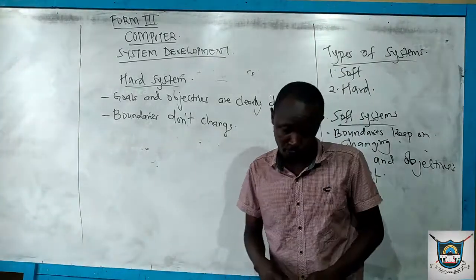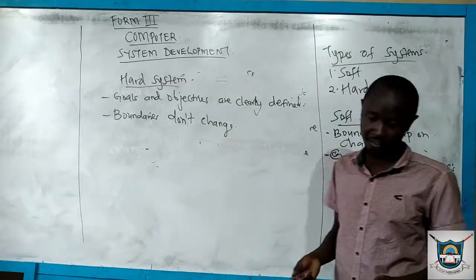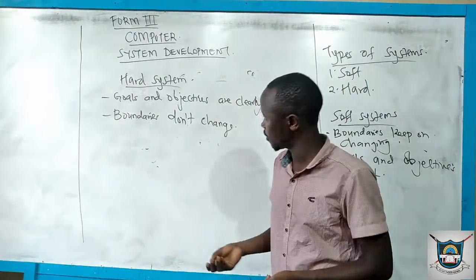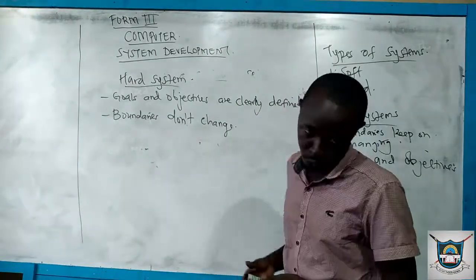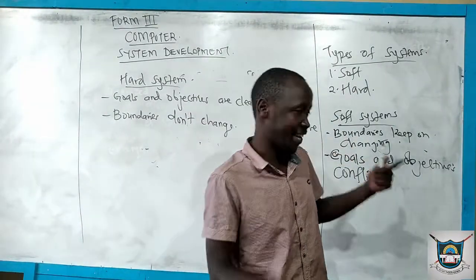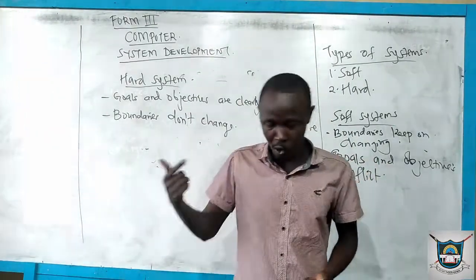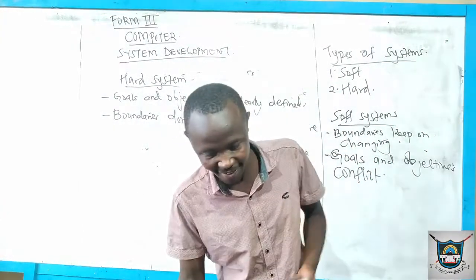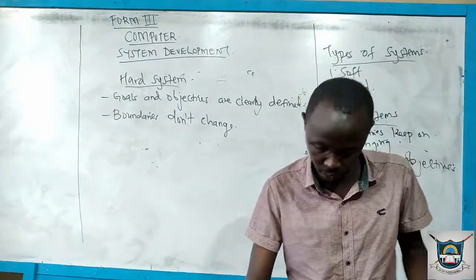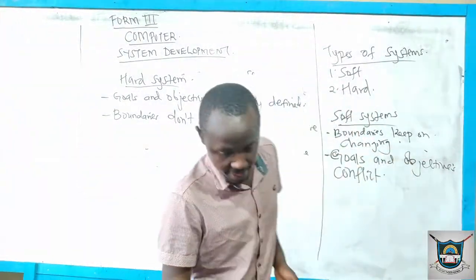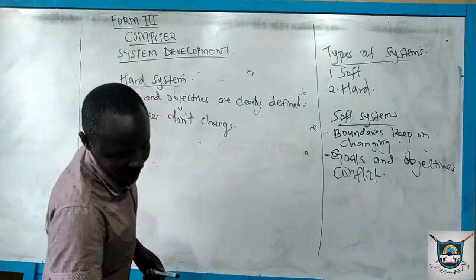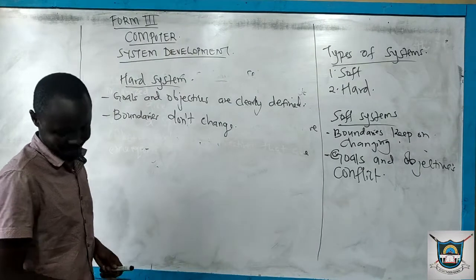A good example of a hard system is the stock management system. For example, in a supermarket, you will be able to tell the goods, you can identify the trades, you know which item is purchased most. Then we look at characteristics of a system.